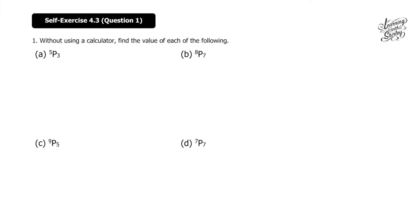Let's look at self-exercise 4.3, question 1. The question states that without using a calculator, we have to show the working. Find the value of each of the following. Before that, we need to know the formula. The formula for nPr is equal to n factorial over (n minus r) factorial.